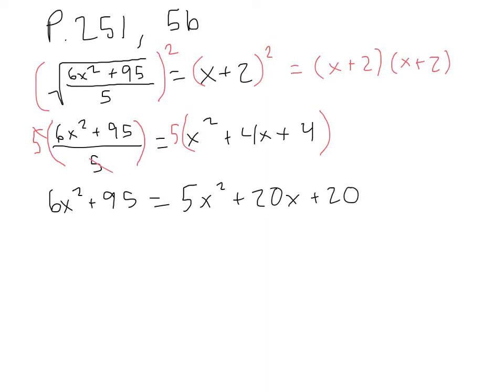And now we want to move everything to the left side of the equation, set it equal to 0, and then we can apply the quadratic formula or factoring to find the solutions. So moving 5x squared to the left, we subtract 5x squared from both sides, that leaves us with x squared. Moving 20x to the left, we subtract 20x from both sides, leaves us with negative 20x. Subtracting 20 from both sides leaves us with positive 75, this equals 0.